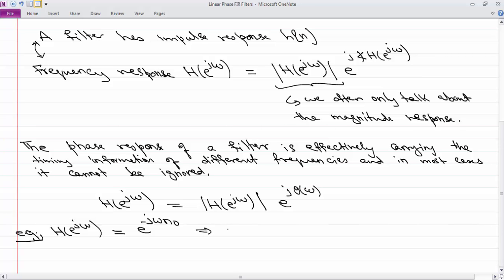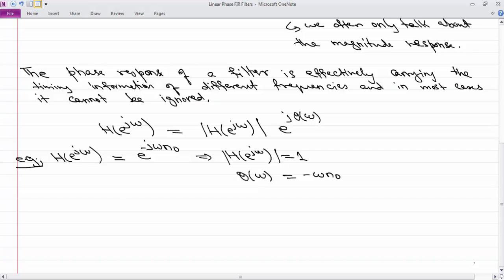So in this case, my magnitude response is, of course, 1. So this is a filter which does nothing to the magnitude, but the phase response, this θ(ω) function, is -ωN₀. And we know what is the impulse response of this filter. The impulse response is simply H(N) equals δ(N-N₀). So what this says is that if your phase response is of the form -ωN₀, then all that is happening to your input signal is that it is getting delayed.